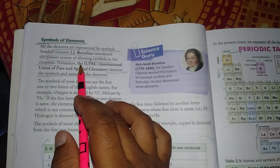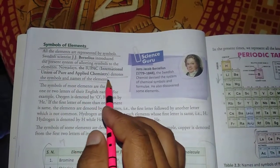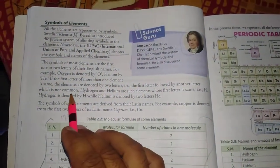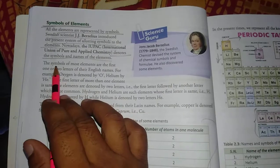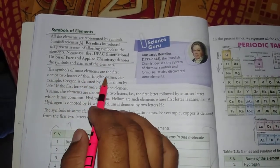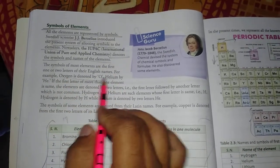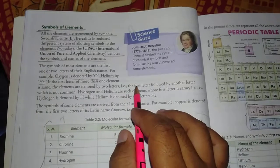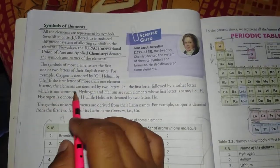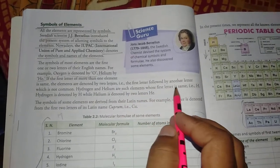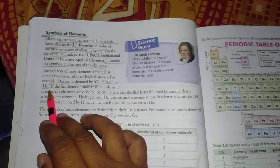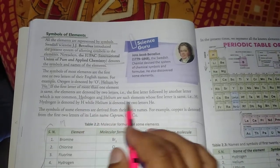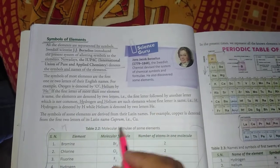But today, the IUPAC is running, which is the International Union of Pure and Applied Chemistry. The symbols of most elements are the first one or two letters of their English names. For example, oxygen is denoted by O, helium is denoted by He. If the first letter of more than one element is the same, the elements are denoted by two letters - the first letter followed by another letter which is not common. Hydrogen and helium are such elements whose first letter is the same, so hydrogen is H and helium is He.